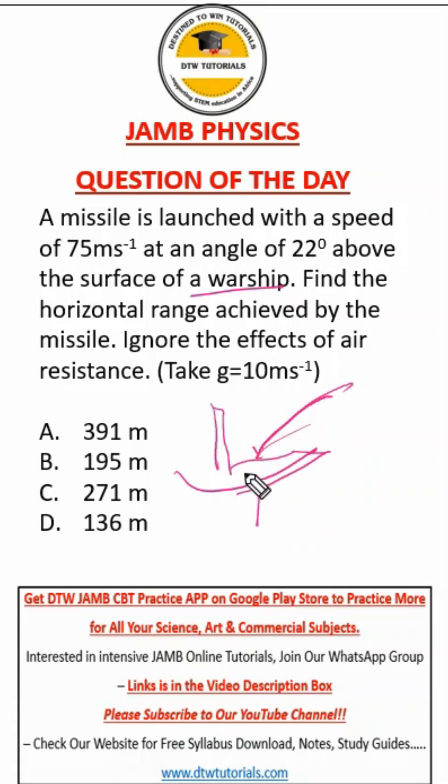This tells you it's projectile motion. I hope you know now this is projectile. So it says find the horizontal range achieved by the missile, that's the distance from here to where the missile hits. It says ignore the effects of air resistance.